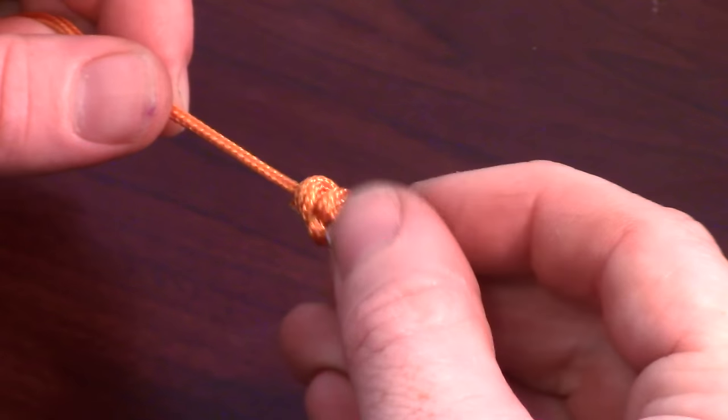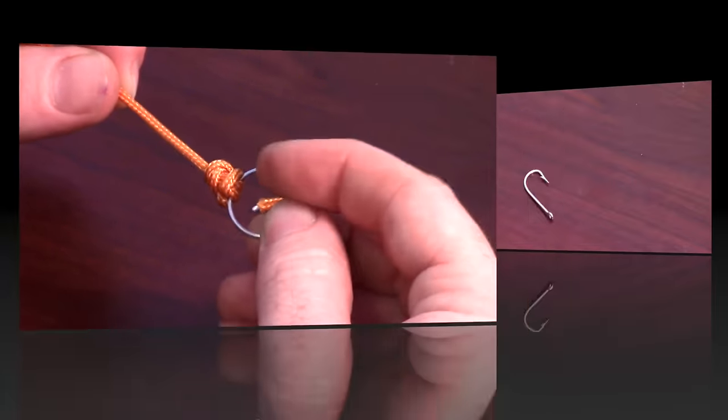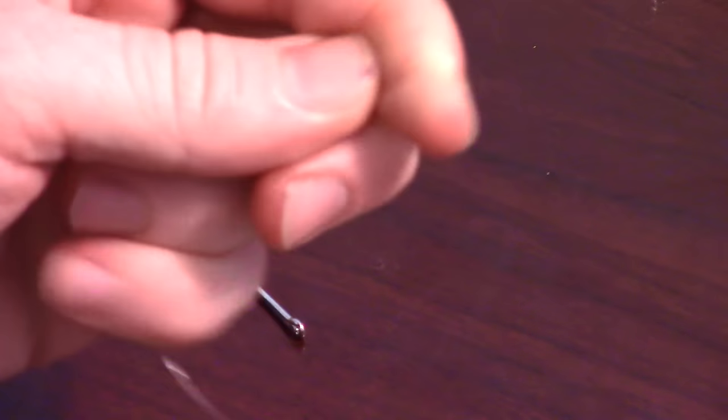So now let's take a look at this knot done properly with fishing line and a hook. I have 20 pound fishing line here and a saltwater hook.